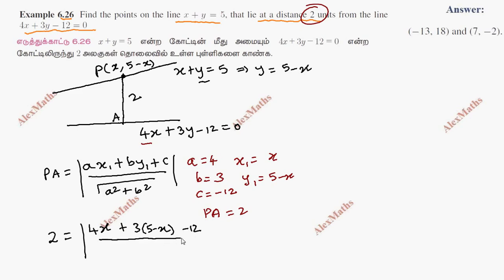We will see this side: 4x plus 15 minus 3x minus 12, all divided by denominator root of 16 plus 9 within the root. So 25 divided by root 5 equals 2.